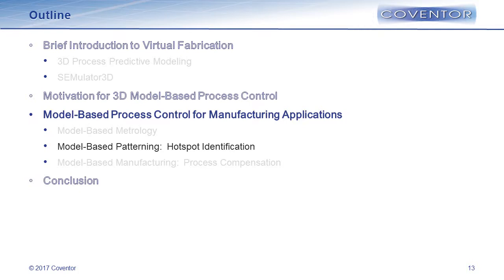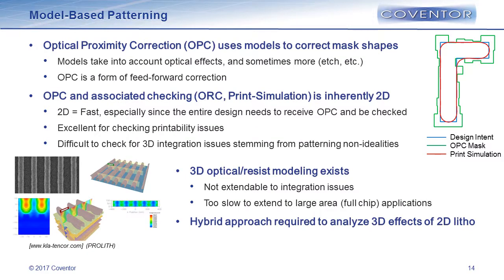Now moving into model-based patterning for hotspot identification and triage. In patterning, OPC has always used models — we're very comfortable with model-based OPC. Models take into account optical effects and correct shapes on the mask to achieve the right shapes on the wafer. This is essentially a form of feed-forward process control. OPC and its associated checking is inherently 2D — you're OPC-ing a single level for a single mask. 2D means it's fast, and it has to be fast because the entire design goes through the OPC operation. This is excellent for checking 2D single-level printability issues. The problem is it's very difficult to check for 3D integration issues in a 2D checking methodology. There are 3D optical and resist models, but they're unit process models, not extendable for full integration, and too slow for large area applications.